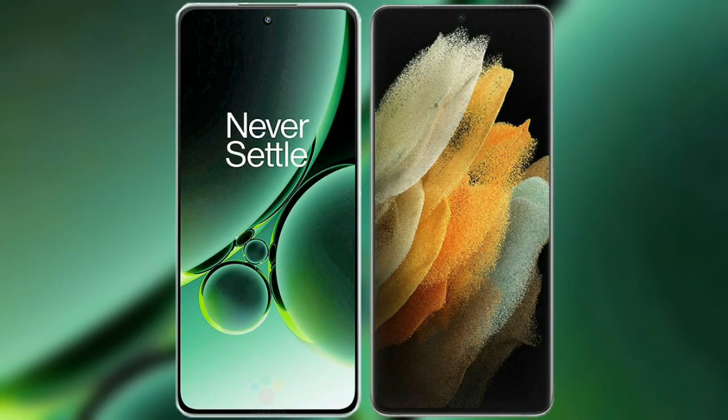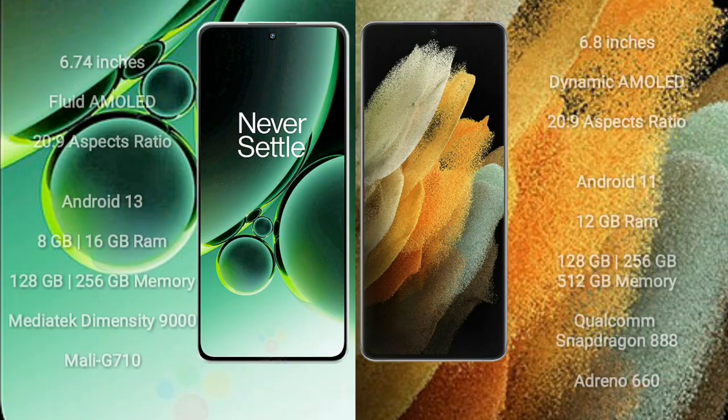I will compare the new OnePlus Nord 3 with Samsung Galaxy S21 Ultra. OnePlus Nord 3 comes with a 6.74-inch flat AMOLED display and 20:9 aspect ratio. Samsung Galaxy S21 Ultra comes with a 6.8-inch Dynamic AMOLED display and 20:9 aspect ratio.